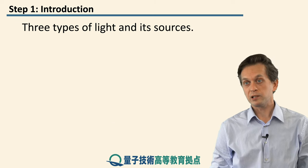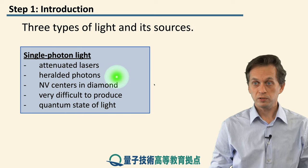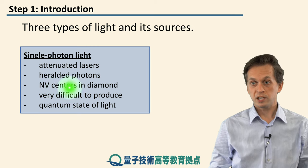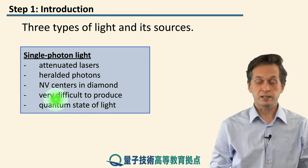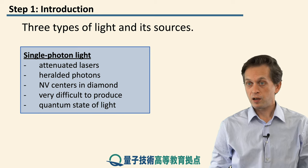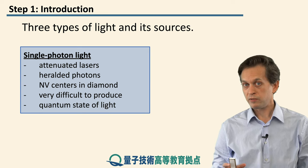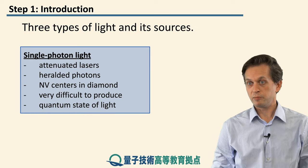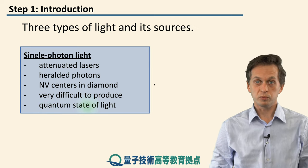Lastly, we will conclude this lesson by looking at single photon sources. We will look at three main ways of producing single photons: by attenuating laser light, by a scheme known as heralded photons, and by looking at a particular physical system known as nitrogen vacancy centers in diamond, which are, among many other things, good sources of single photons. Compared to the previous two types of light, single photons are very difficult to make — they can only be produced under very stringent requirements in laboratories. But they can display quantum behavior, which is why they are crucial in quantum communication.